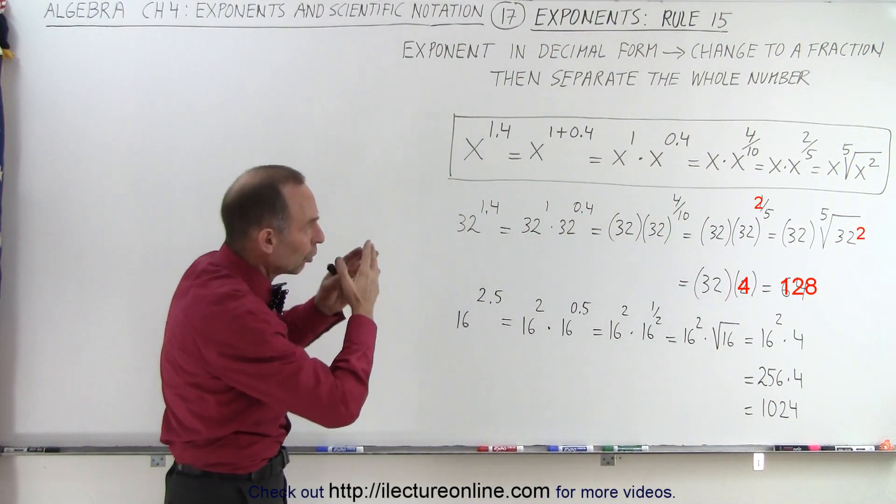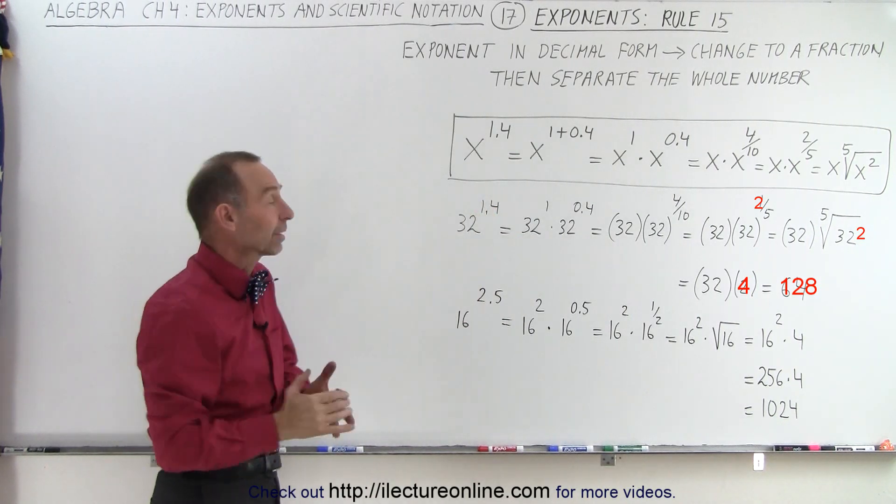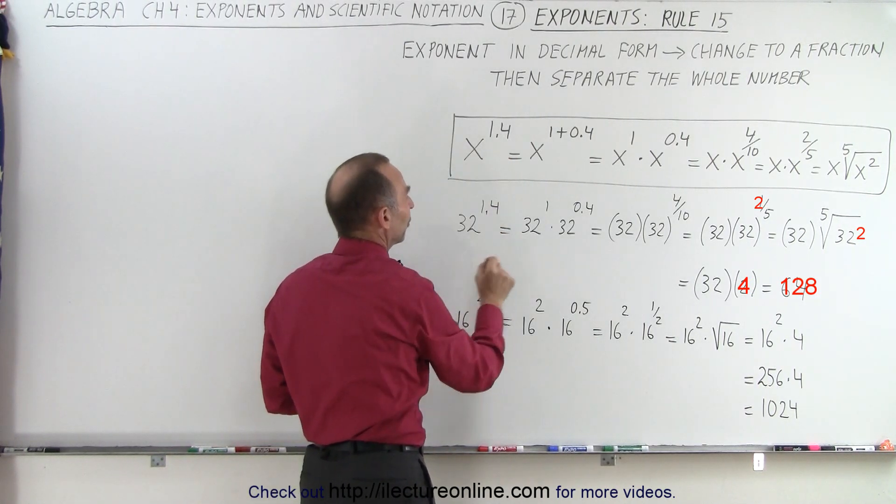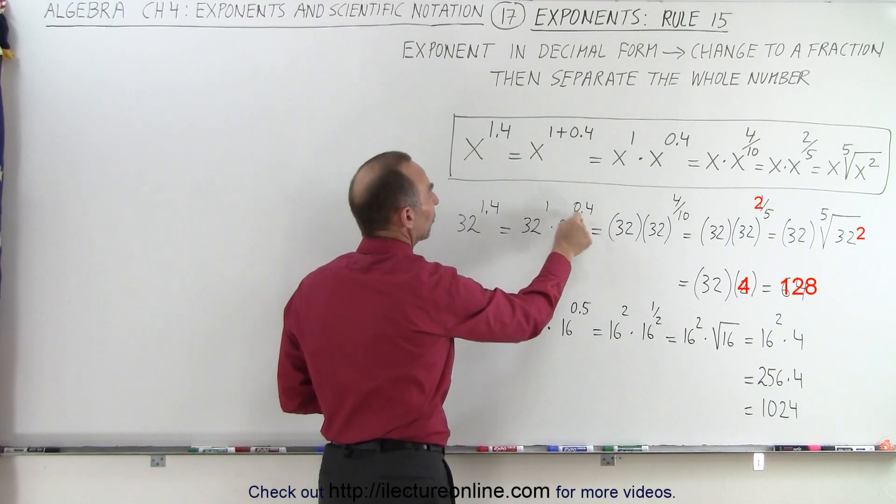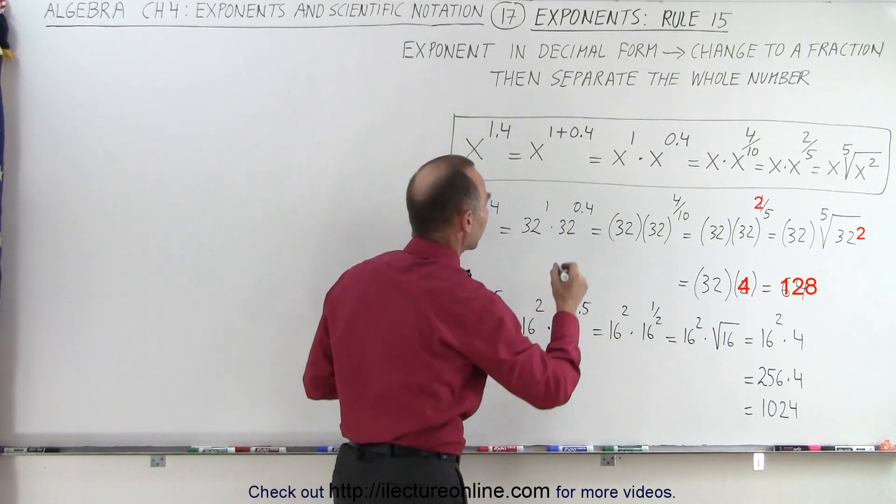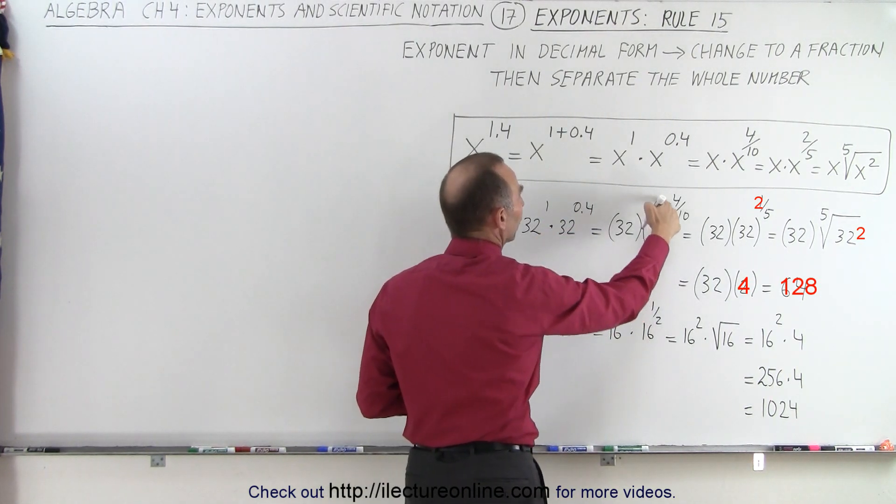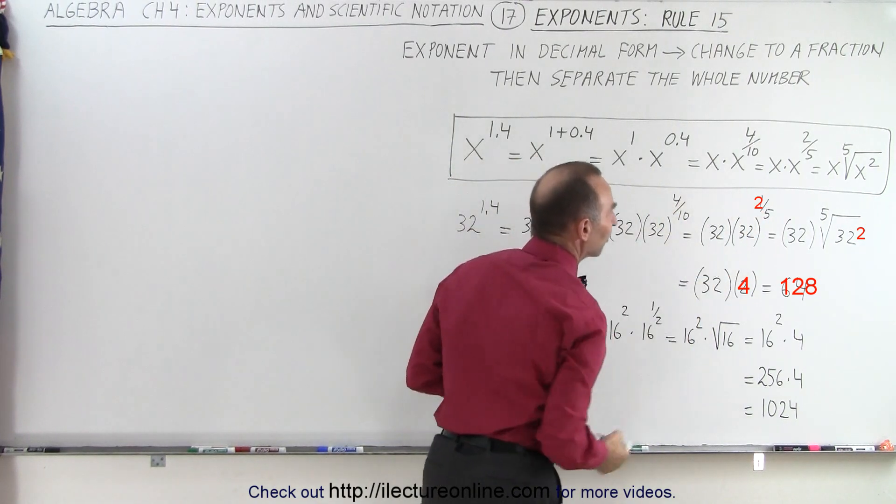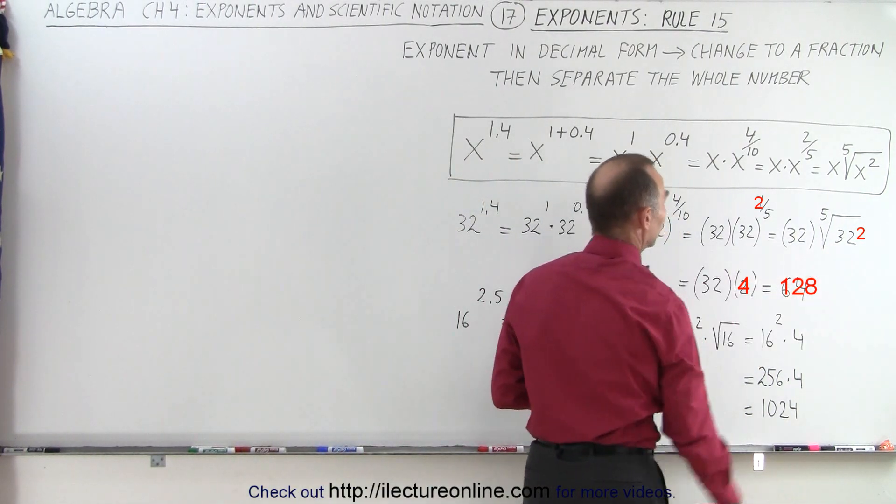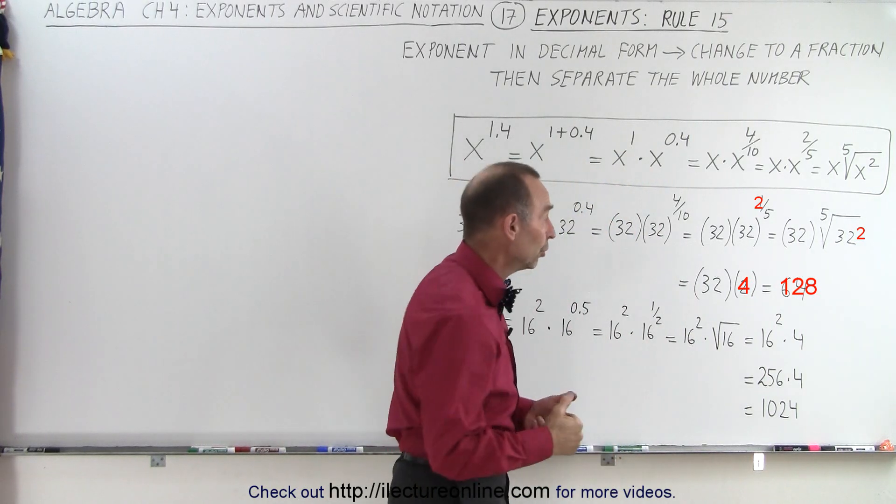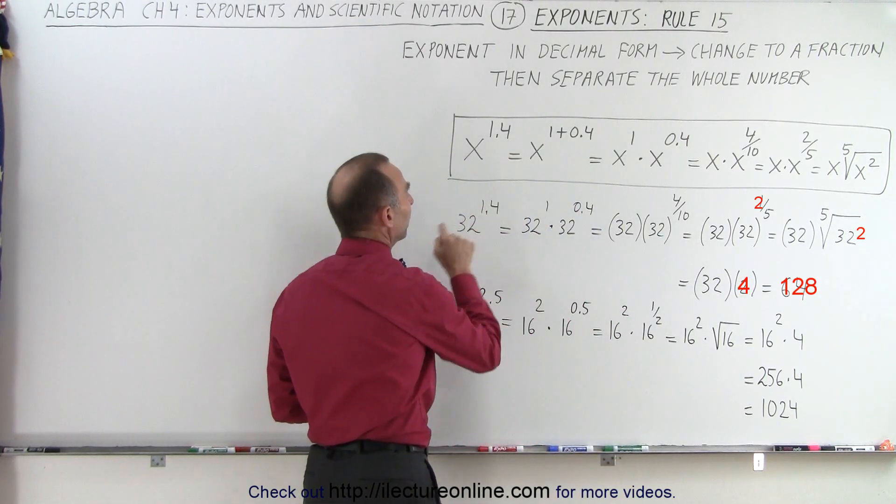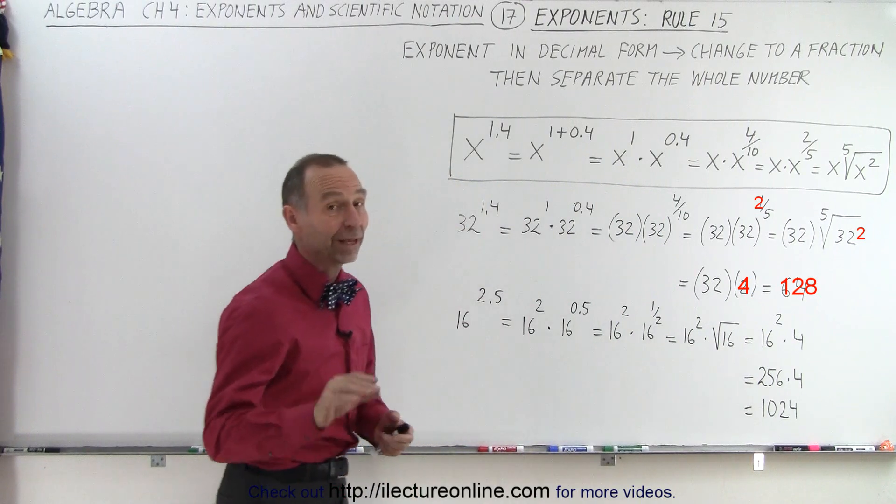So you can see that it's kind of a long explanation to indicate a rule, but let's apply it to some practical examples. Let's say we have the number 32 raised to the 1.4 power. Just like before, we separate the whole number from the decimal number from the fractional number, so we have 32 to the 1st power times 32 to the 0.4 power, which means 32 times 32 to the 4 tenths or 32 times 32 to the 2 fifths, and of course 2 fifths is the fifth root, so this can be written as 32 times the fifth root of 32. Well, the fifth root of 32 is 2, so it's 32 times 2 or 64. In other words, 32 raised to the 1.4 power is equal to 64. No calculator necessary.